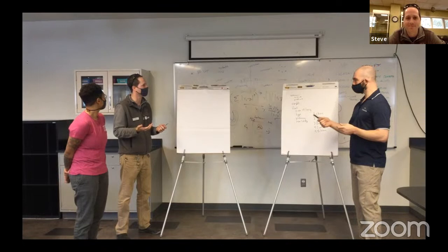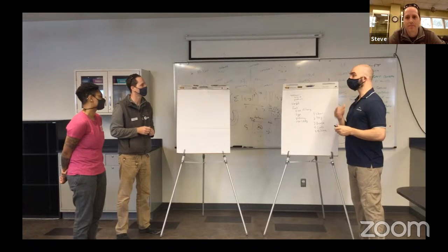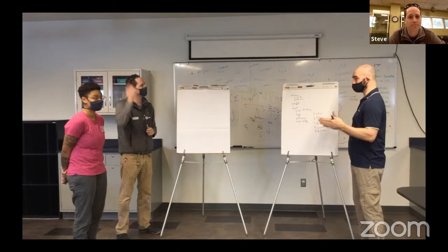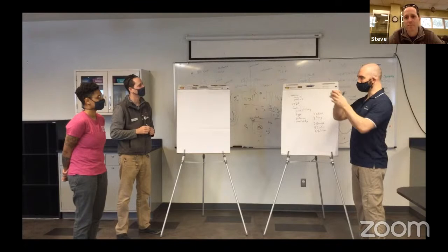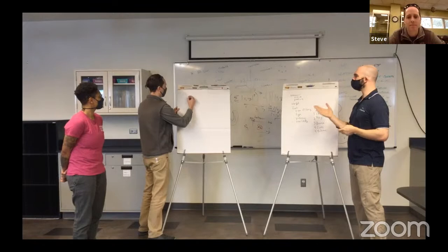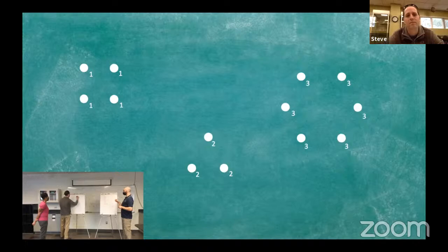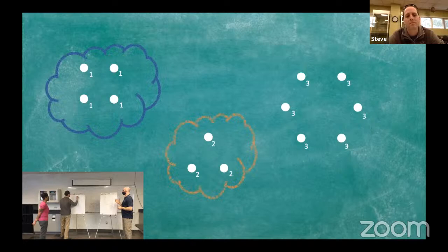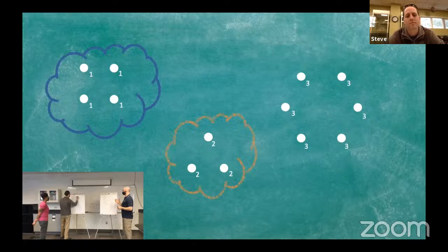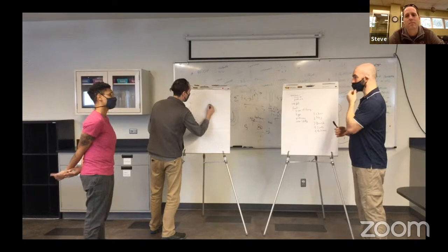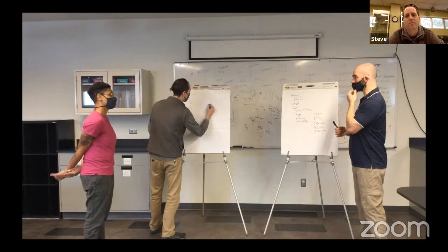Machine learning sounds like a very complex topic, and it is complex — but fundamentally it boils down to one thing: connecting the dots. We have data and we ask what patterns emerge. We've all seen or played connect-the-dots before. But what if you've got four number ones scattered about, some number twos, number threes? How do you connect a line across those different groups of data? What is the best line that most accurately describes the data? That's what machine learning is all about — fitting those lines.